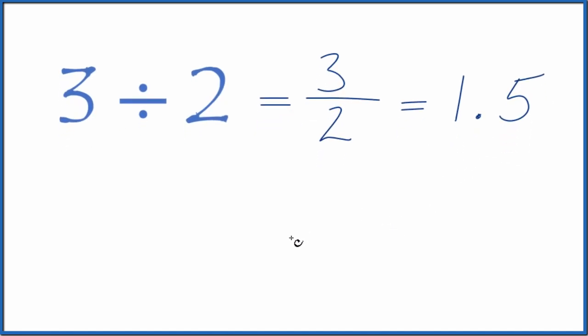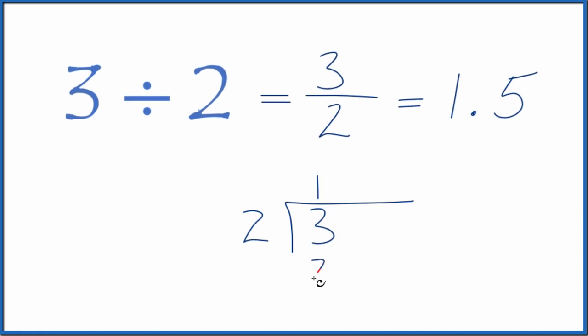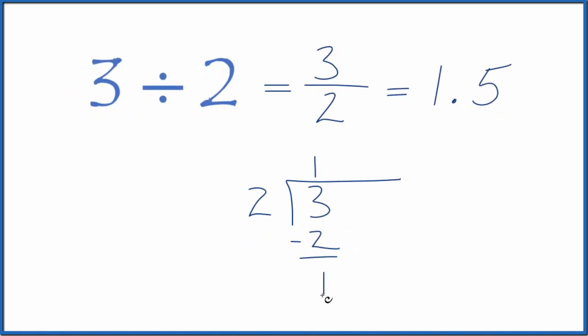You can also do this longhand. You could take 3 and see how many times 2 goes into 3. So we'll divide longhand. 2 goes into 3 once, so 1 times 2, that's 2. Subtract and we have 1.